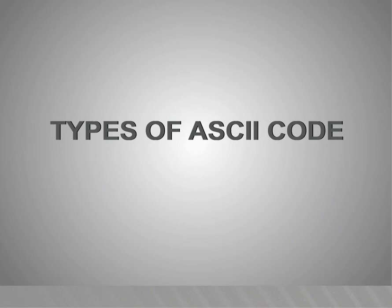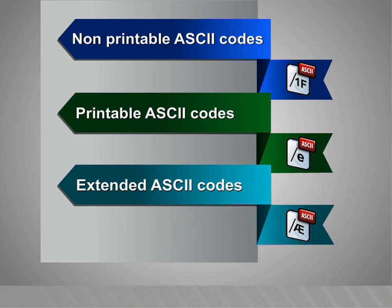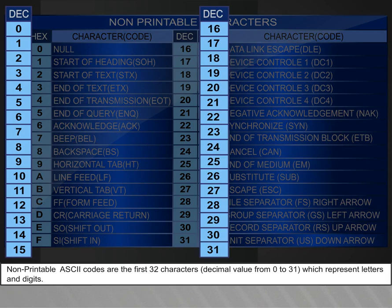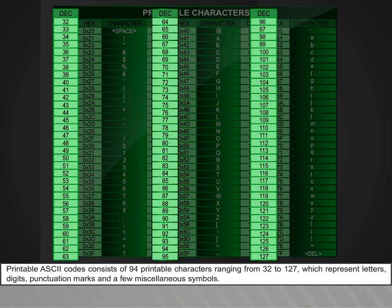Types of ASCII code: Non-printable ASCII code, Printable ASCII code, and Extended ASCII code. Non-printable ASCII codes are the first 32 characters, decimal value from 0 to 31, which represent letters and digits, punctuation marks, and a few miscellaneous symbols.